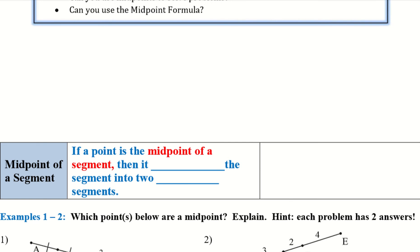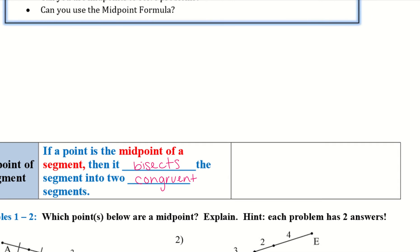If a point is the midpoint of a segment, then it bisects the segment into two congruent segments. So if I have, let's go ahead and draw this line here, A, B, and C, and I say that B is a midpoint.